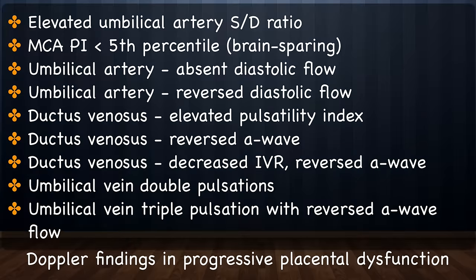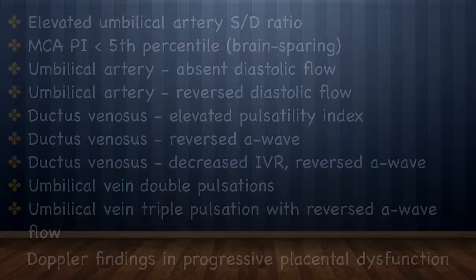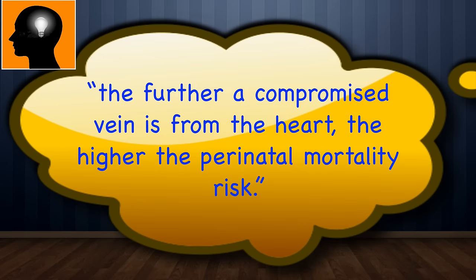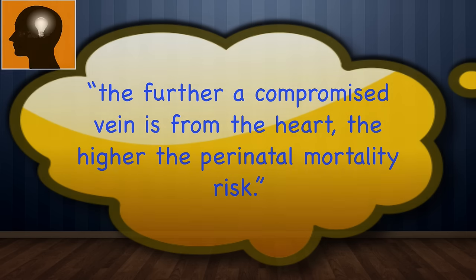Progressive chronic placental dysfunction typically follows a sequence shown here. The only exception is in cases of preeclampsia, where the Doppler changes are unpredictable. What I want to emphasize is that the further a compromised vein is from the heart, the higher the perinatal mortality risk. For example, perinatal mortality is eight times greater with abnormal ductus venosus waveform pattern and 18 times greater with pulsations in the umbilical vein.